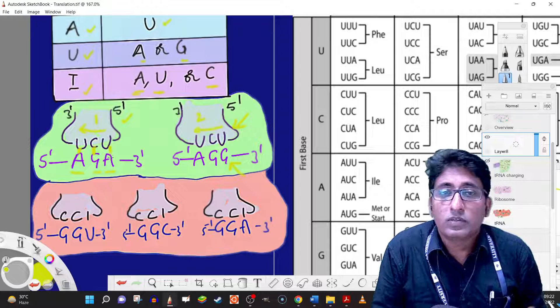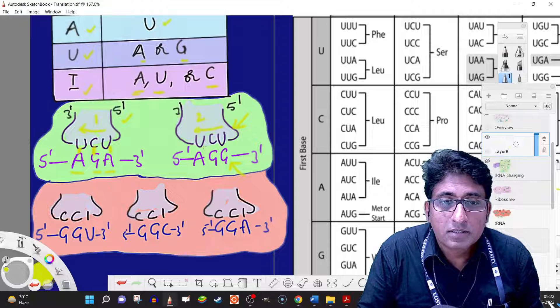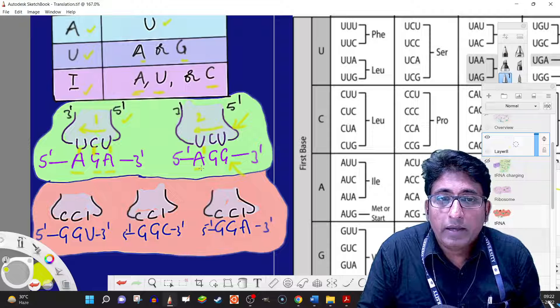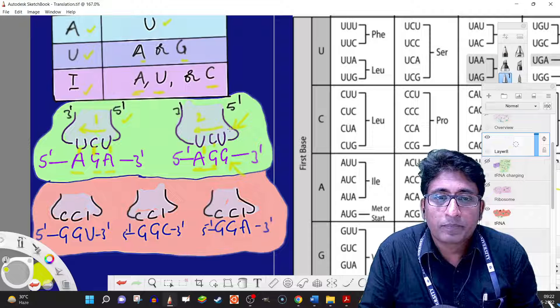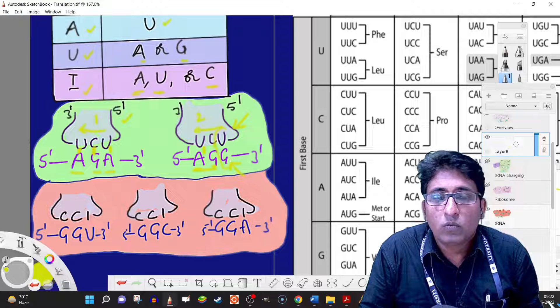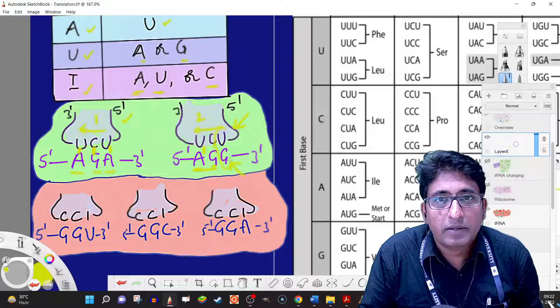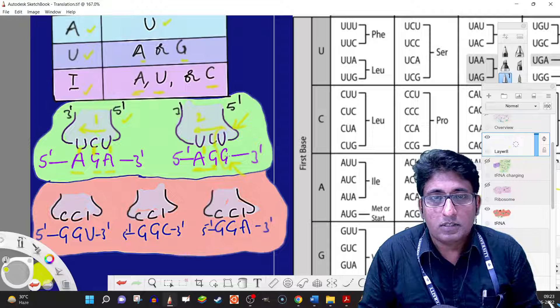Here we have a difference: U is base pairing with A, and C and G are base paired, but here we have something a little bit different where U and G are base paired, which is abnormal.